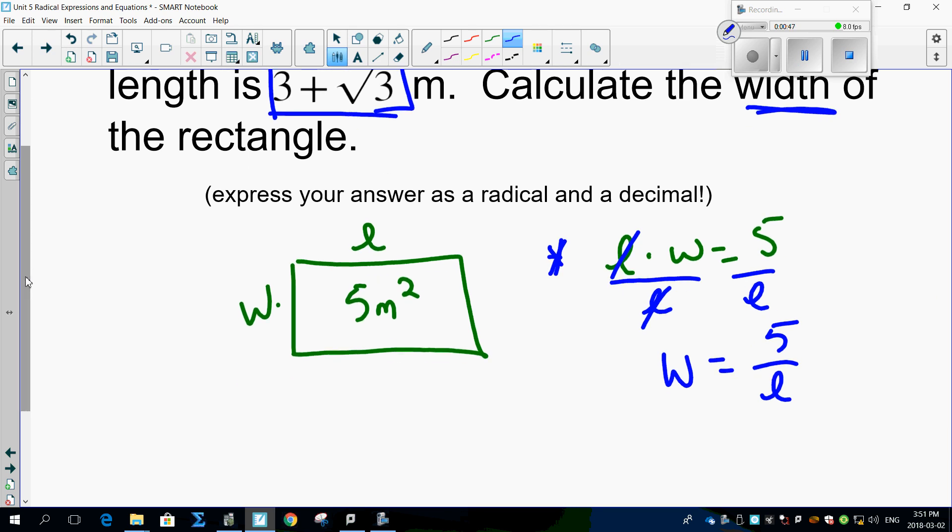Okay, so in other words, what we've got here is we've got 5 over 3 plus root 3. That's what the width is going to be, and that's straight out.